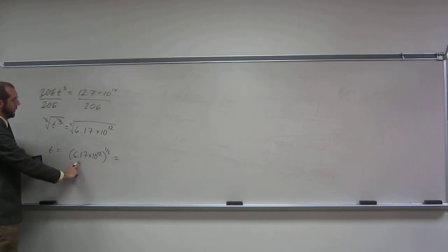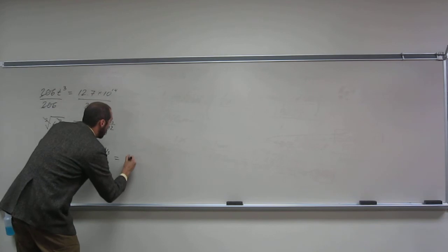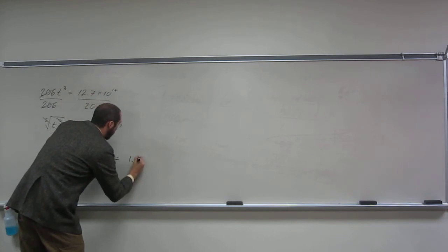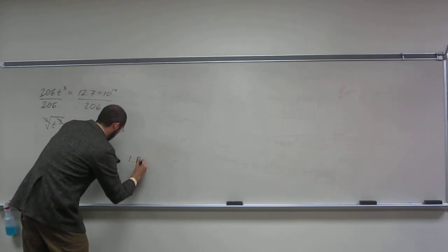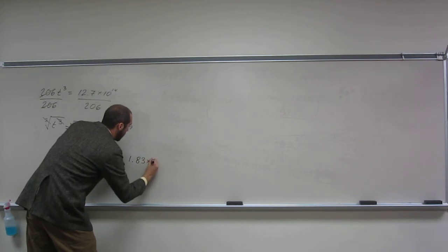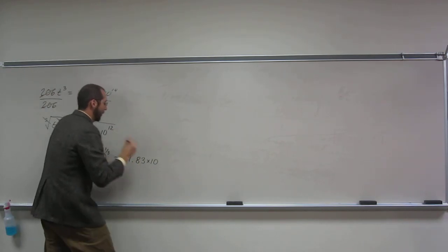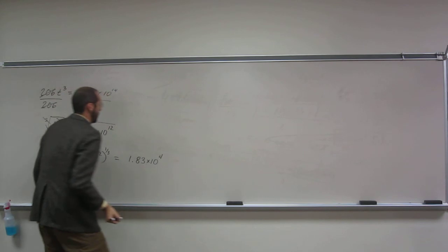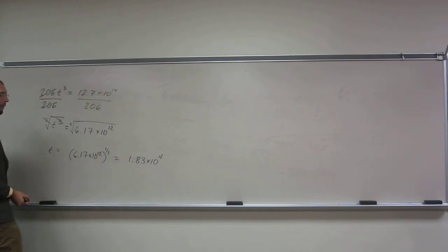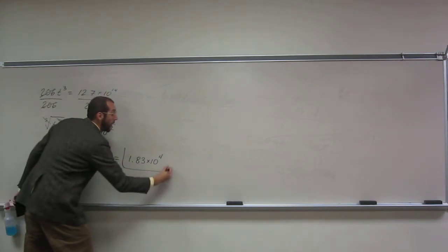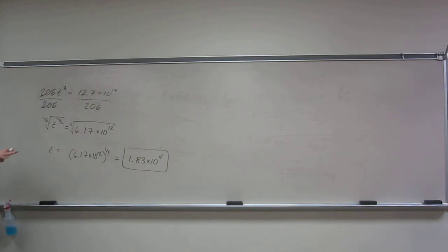This number here has 3 sig figs, this one has 3 sig figs, so our answer's going to have 3 sig figs. So 1.83 times 10 to the 5. But it makes sense.